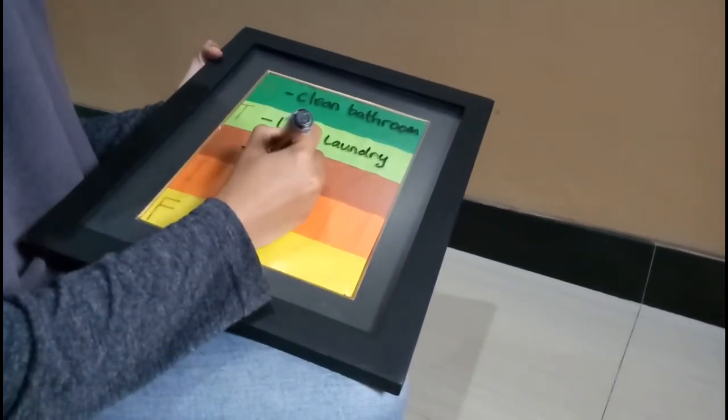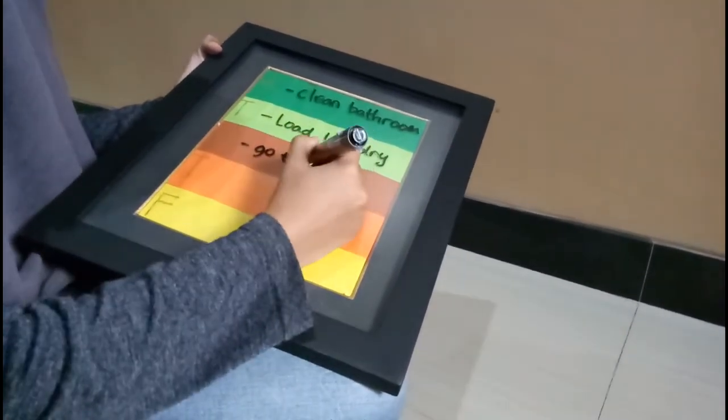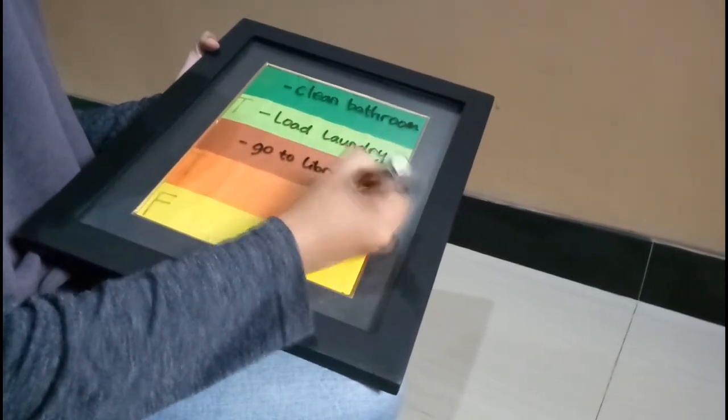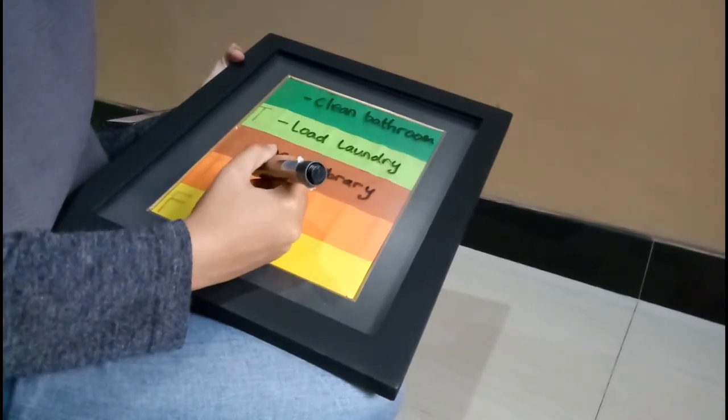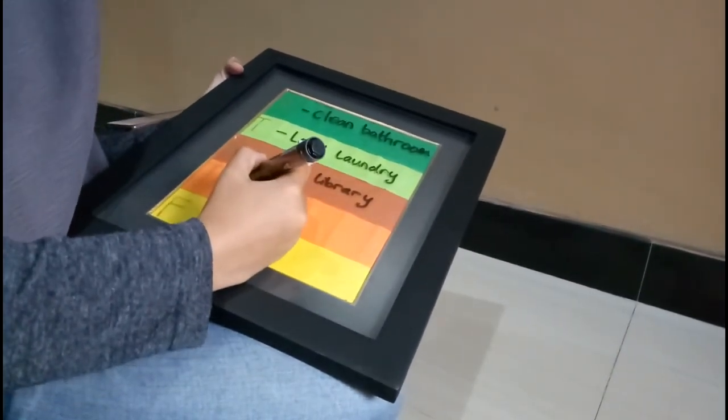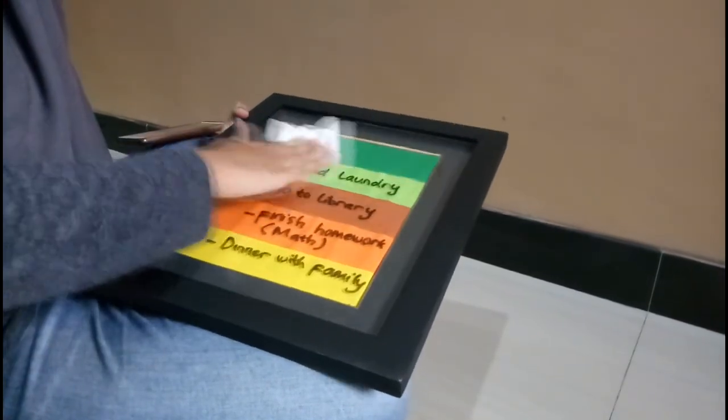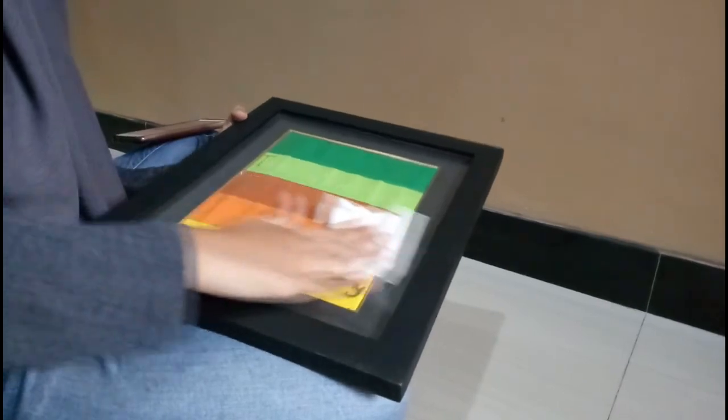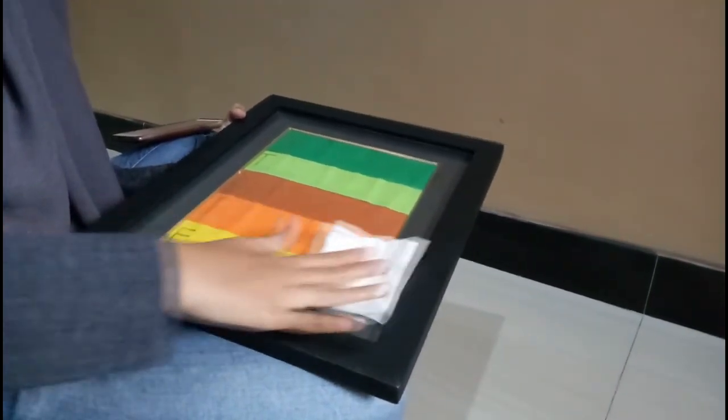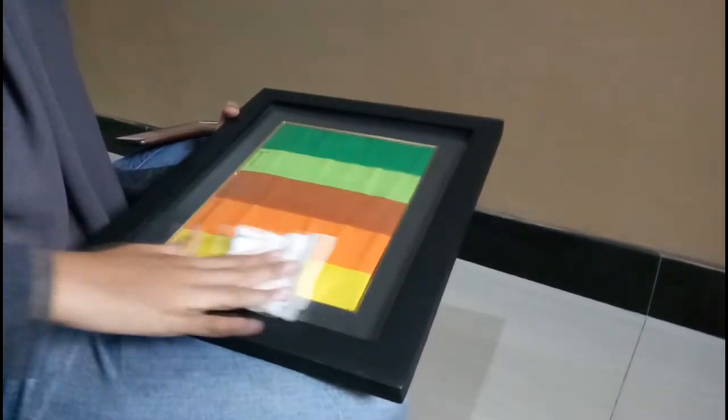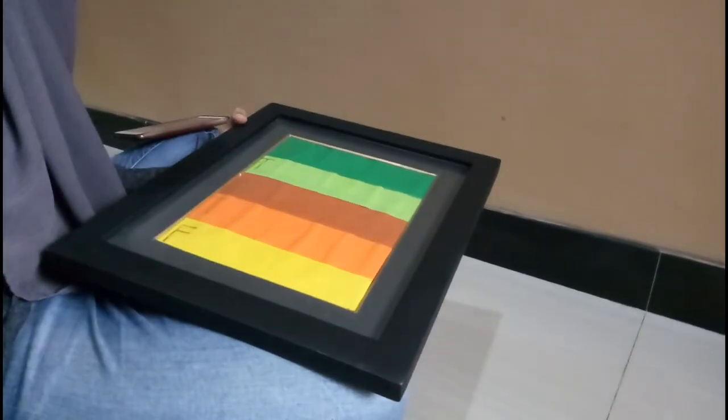Where you can write down important things like assignments that are due that week, events that are coming up, and reminders to keep you on top of everything. You can use wipes to easily wipe out the whiteboard at the end of every week, so you can use the calendar and make changes as needed throughout the week.